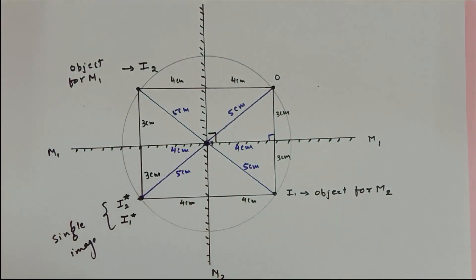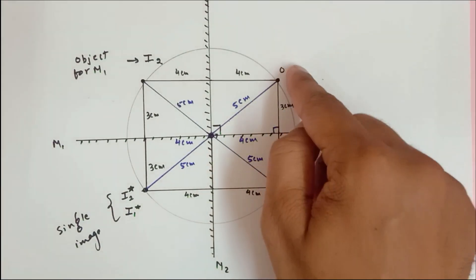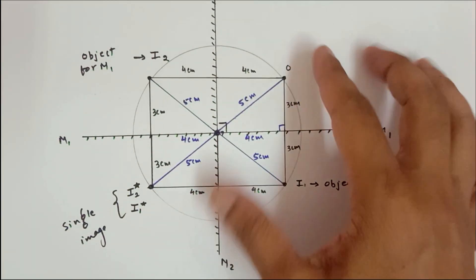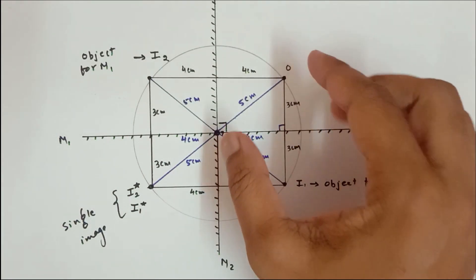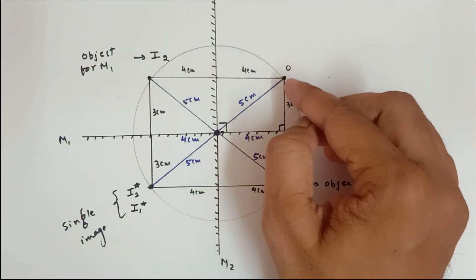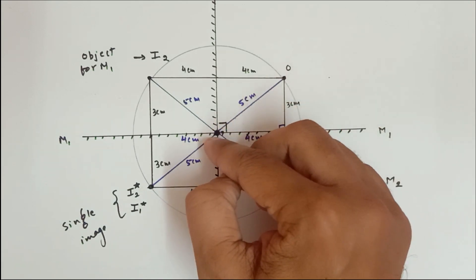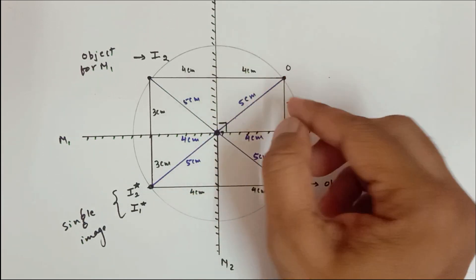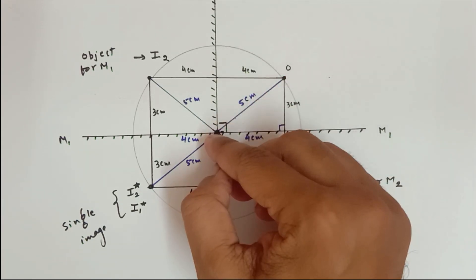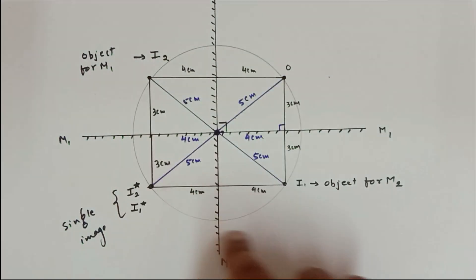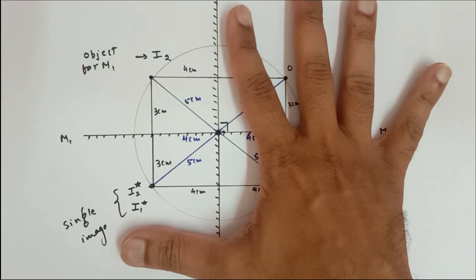I notice an interesting thing: all these objects and images lie on a circle whose radius is equal to the distance from the object to the point of intersection of the mirrors. So all of these objects and images lie on the circumference of the circle.